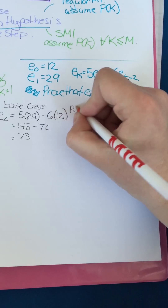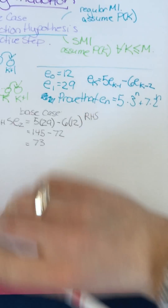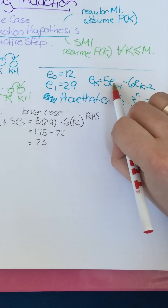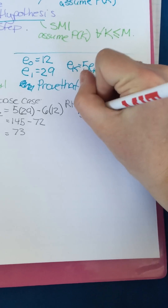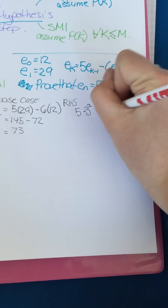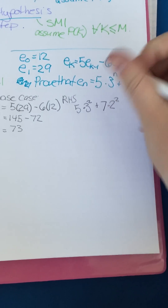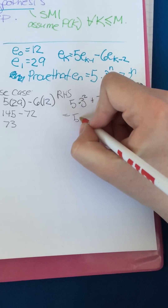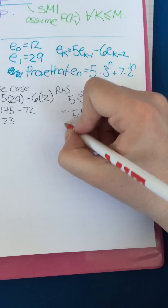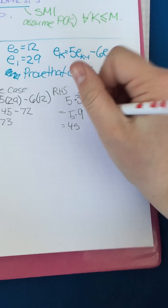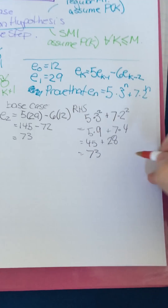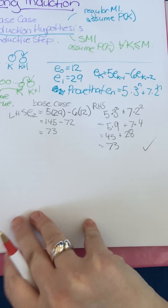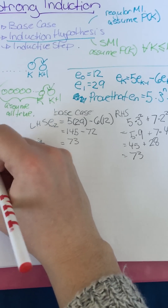Now we check the right-hand side: 5·3² + 7·2² = 5·9 + 7·4 = 45 + 28 = 73. The left-hand side equals the right-hand side, so the base case holds — that's true.